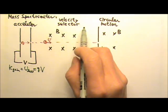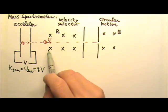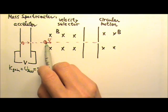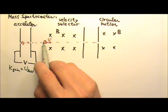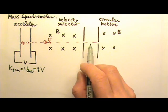For the velocity selector part, we have a magnetic field over here, but we do not want the particle to do circular motion. We want to make the particle go straight, but in order to do that, we have to provide an electric field.